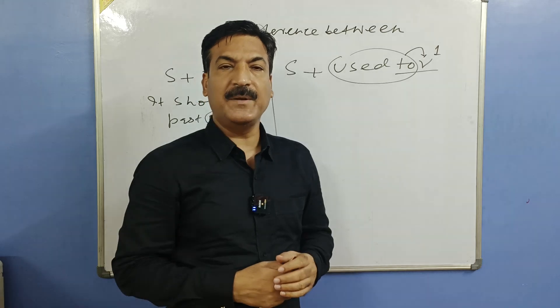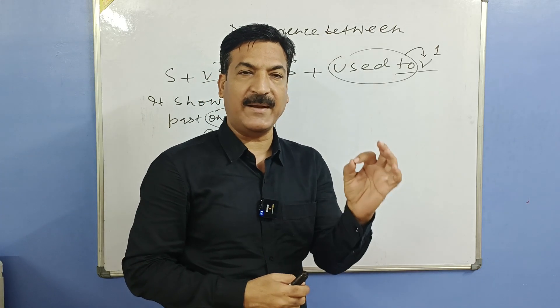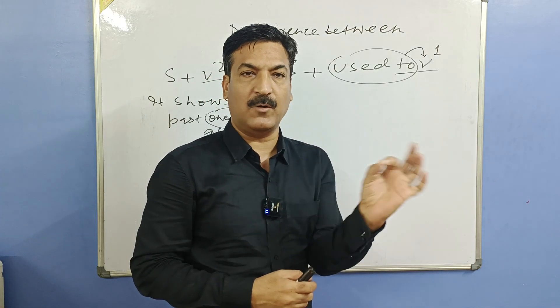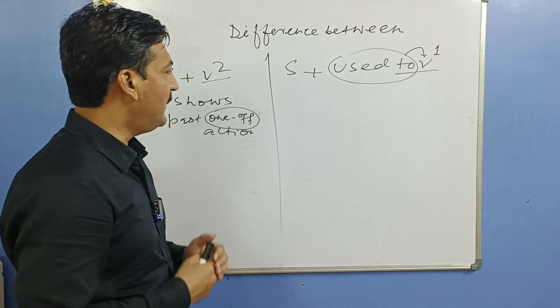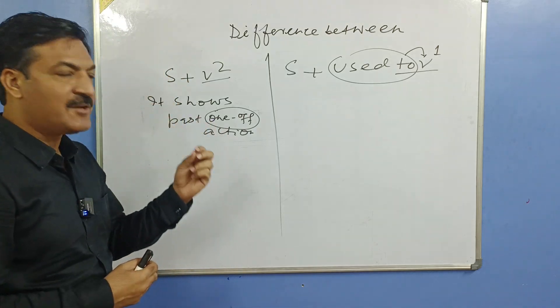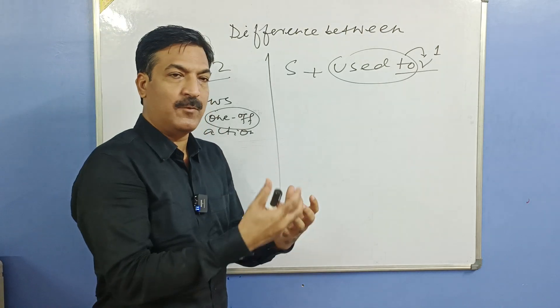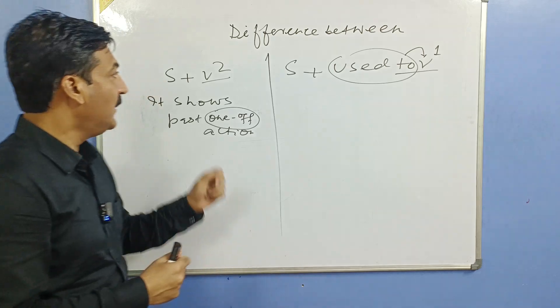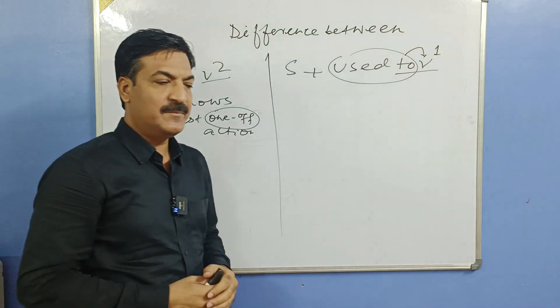Tum nahi aaye — kitni der ki baat karein? Ek baar. Yaani ek baar hua hai aur wo khatm ho gaya. Toh jab kabhi bhi hum past mein us action ki baat karein jo ek baar hua aur khatm ho gaya, uske liye V2 ka use karein.